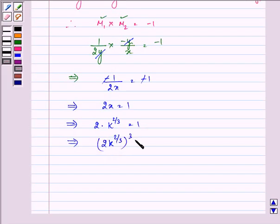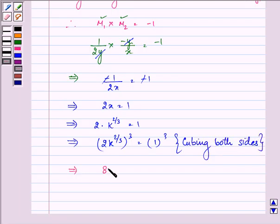Cubing both sides, we have (2k to the power 2/3) cubed equals 1 cubed. So we have 8k squared equals 1, and this is what we were required to prove.